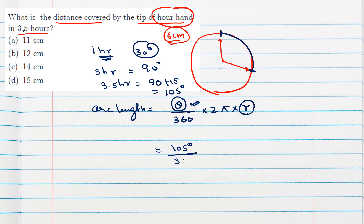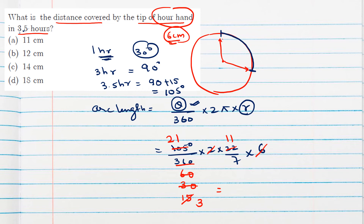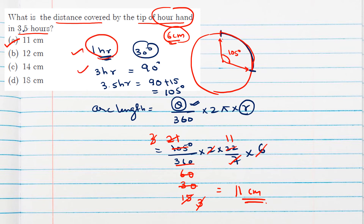Applying the arc length formula: (105/360) × 2 × (22/7) × 6. After cancellations — simplifying 105/360, cancelling factors of 6, 2, and 3 — the final answer is 11 centimeters. This matches option A. Remember: distance covered by the tip means arc length, and we use 1 hour = 30 degrees for the hour hand.